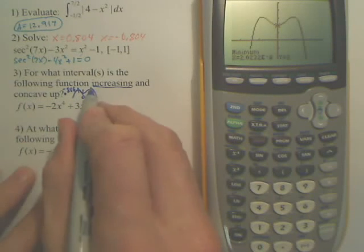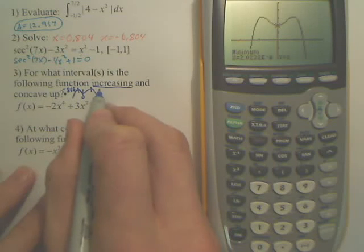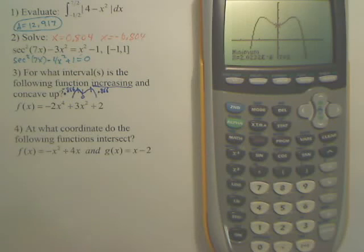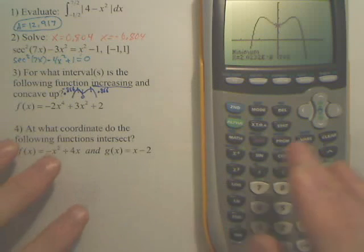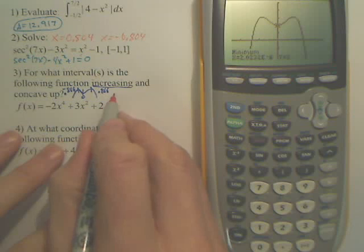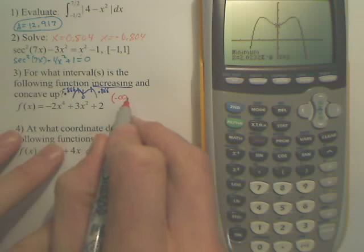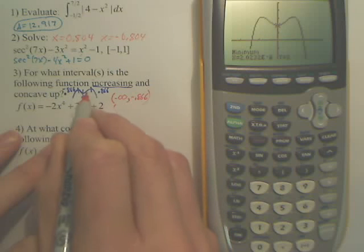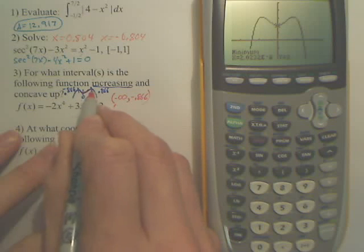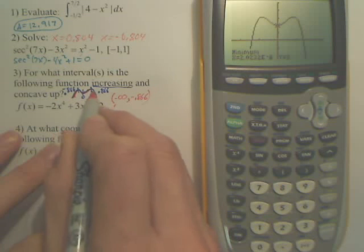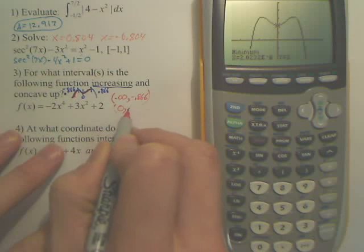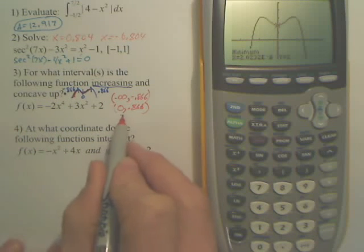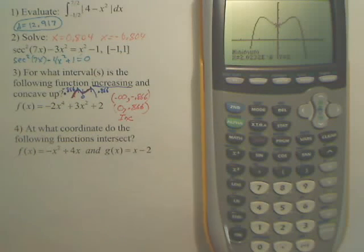So, this break right here is at zero, and I'm just going to tell you, if you do the same process, this one's 0.866, okay? So, if I went where it's increasing, basically it's increasing from negative infinity to negative 0.866, and it's also increasing right here, so it's increasing right here, and right here. So, from here, it's from zero to positive 0.866, that's where it's increasing.